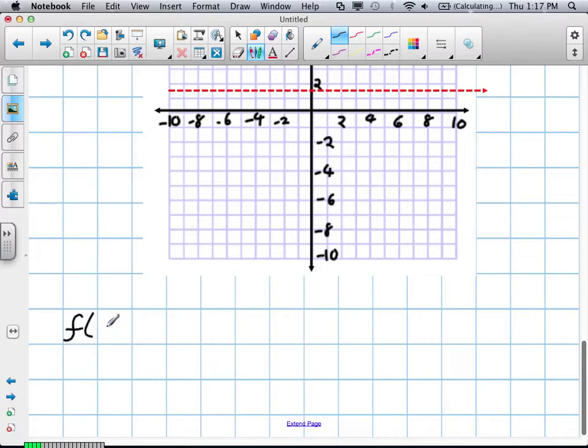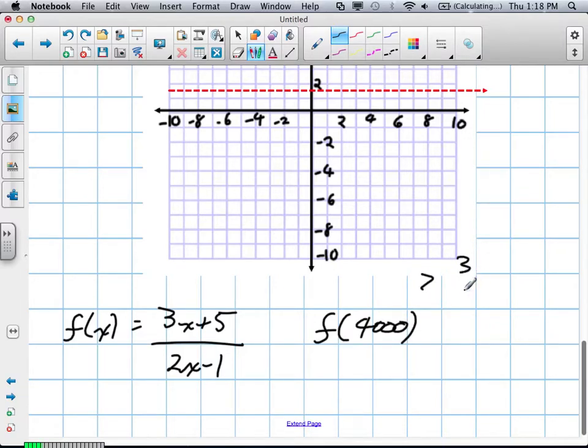We're going to take our f(x) equals 3x plus 5 over 2x minus 1. And all we're trying to find out is, when we put in this very large value of 4,000, let's say, is it going to be greater than the horizontal asymptote at 3/2?